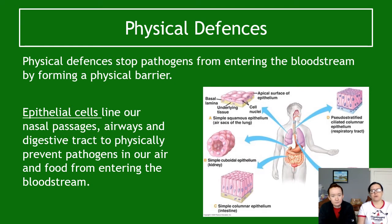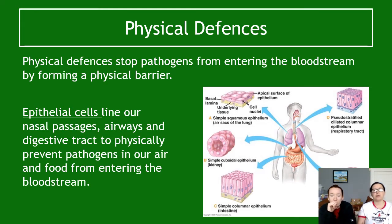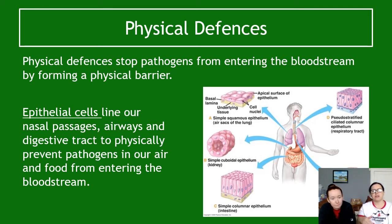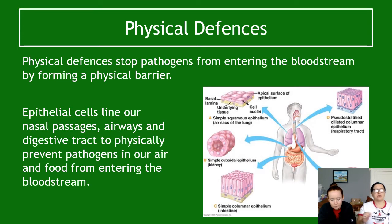Physical defences are our first type of non-specific defence. They physically stop pathogens from entering the bloodstream by forming a physical barrier. Epithelial cells form the barrier on our inside surfaces. Think of it this way: you are essentially a hollow organism from mouth to anus, with skin lining the entire digestive tract, blocking pathogens. Additionally, epithelial cells line our lungs, preventing pathogens from entering the bloodstream. Epithelial cells are different from skin cells — they are a kind of inside skin cell.